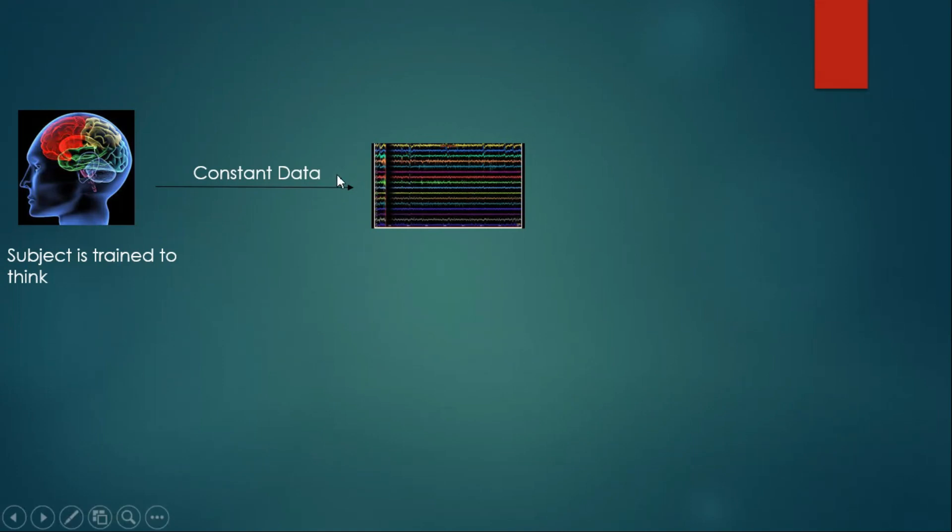If this person thinks 20 times how to move his arm, if we get similar data 20 times, then we know this data or this graph is for moving the arm. Whenever we get this graph from the human brain, it means the person wants to move his arm. So we teach the prosthetic arm by various machine learning to execute this data.